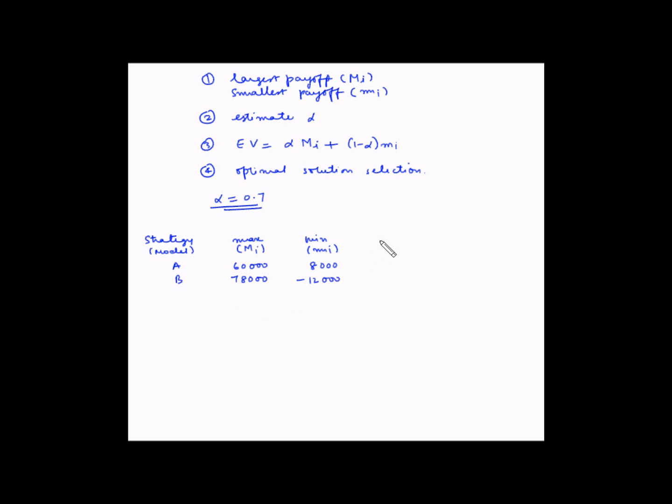Now let us calculate the expected value for each case using the formula: M_i × α + (1 - α) × m_i. For model A: 0.7 × 60,000 + 0.3 × 8,000 = 42,000 + 2,400 = 44,400.